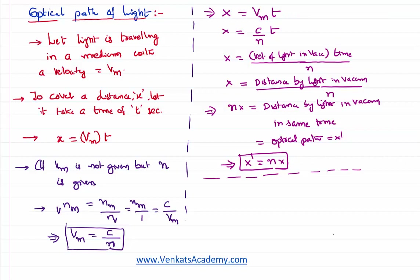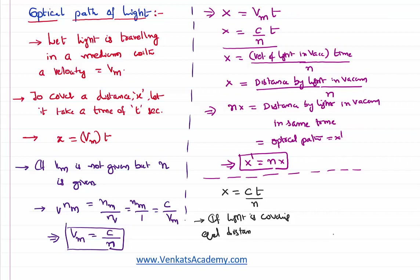Optical path is simply the distance travelled by light in vacuum compared with the distance travelled by light in any other medium in the same time. Coming back to this derivation, we can use it further. If somebody says light is covering equal distance in two different media, then since distance is the same and c is the same, the time taken to cross is automatically equal to the ratio of the refractive indexes.